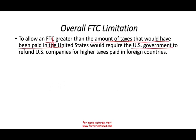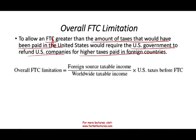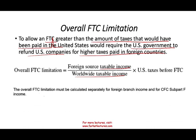To allow a foreign tax credit greater than what would have been paid in the U.S. would effectively mean the U.S. government is giving you a refund for higher taxes paid in foreign countries, and that is not going to happen. The overall limitation formula is: foreign source taxable income divided by worldwide taxable income, multiplied by U.S. taxes before the foreign tax credit. This limitation must be computed separately for foreign branch income and for controlled foreign corporation subchapter F income.